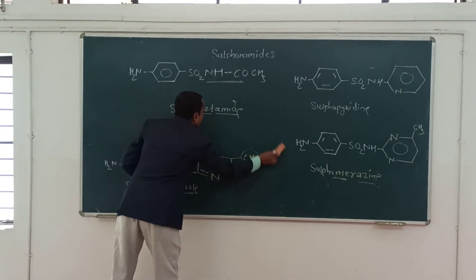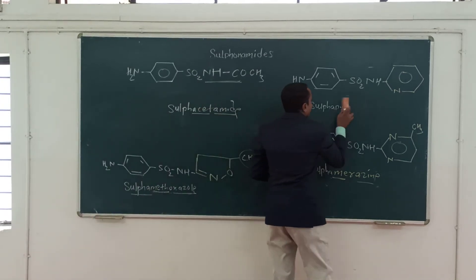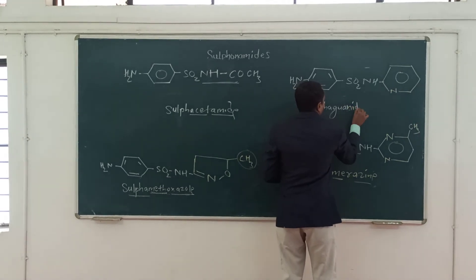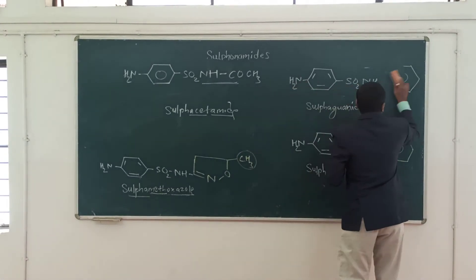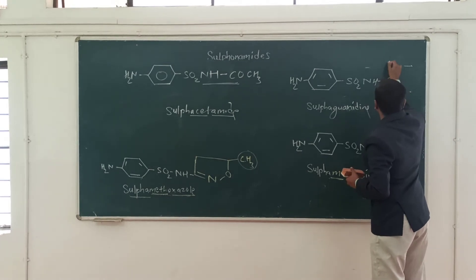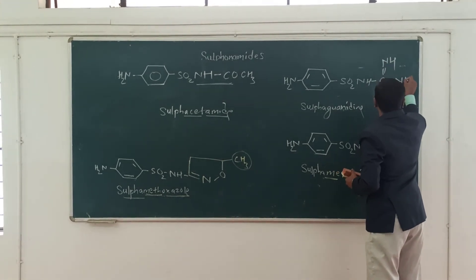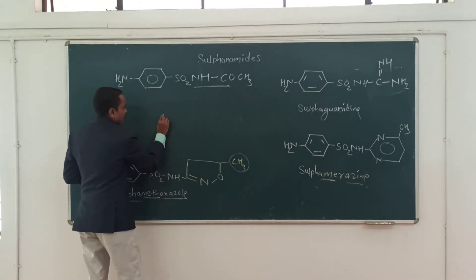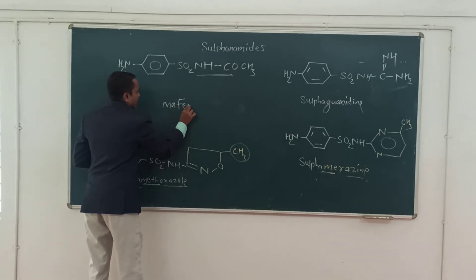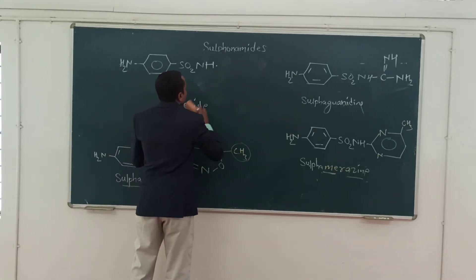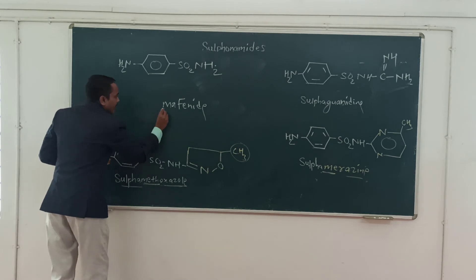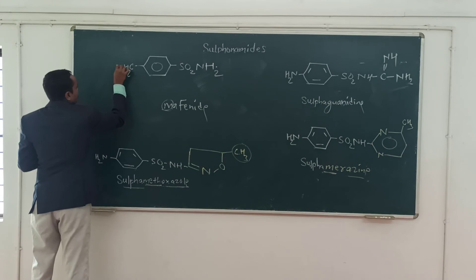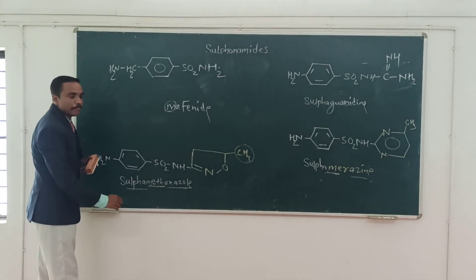Next is sulfaguanidine. Here the guanidine group replaces the position found in sulfacetamide. One more compound I will do over here, that is mafenide. Mafenide indicates the presence of methylamine. So here we have to remember this structure, and it becomes mafenide.